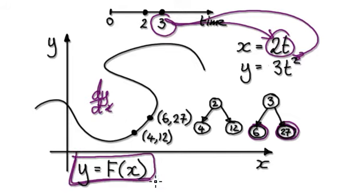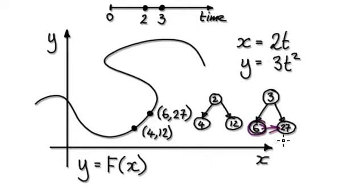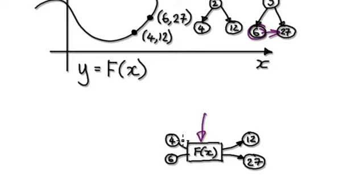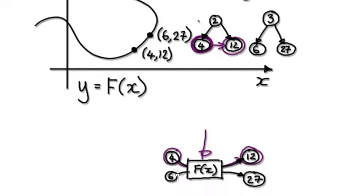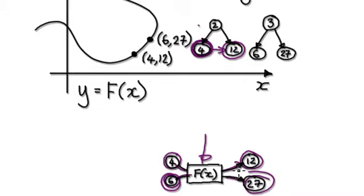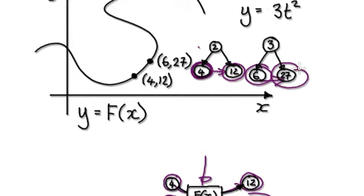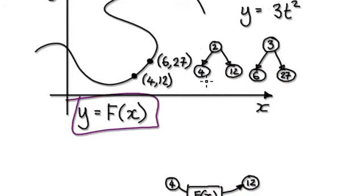And in order for us to find the dy/dx, we would need to make this first step. What this first step is saying is that we need to find a way of, when given an x value, jumping to the y straight away. When given a 6, we need to be able to jump to the 27. So that's really us trying to find a function such that when we put 4 in, we get 12, and when we put 6 in, we get 27. So when given an x value, we can jump straight to the y.